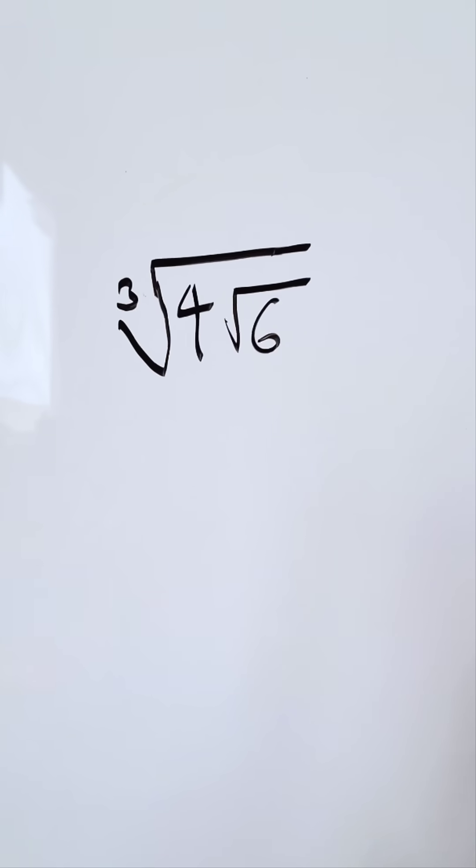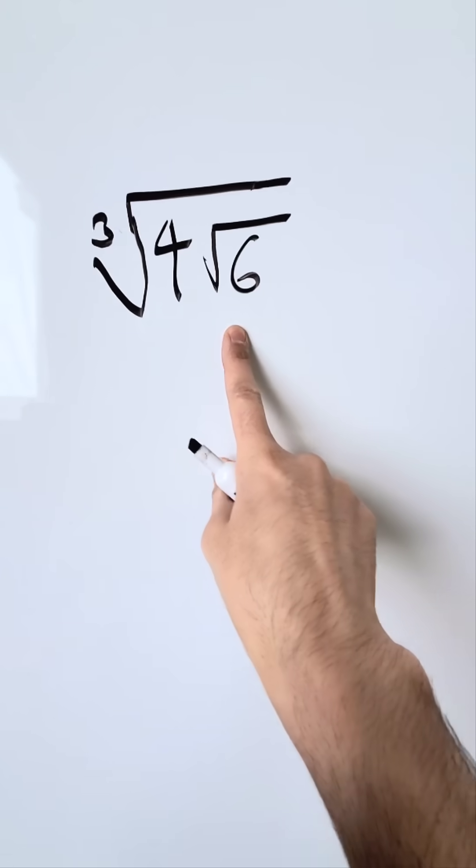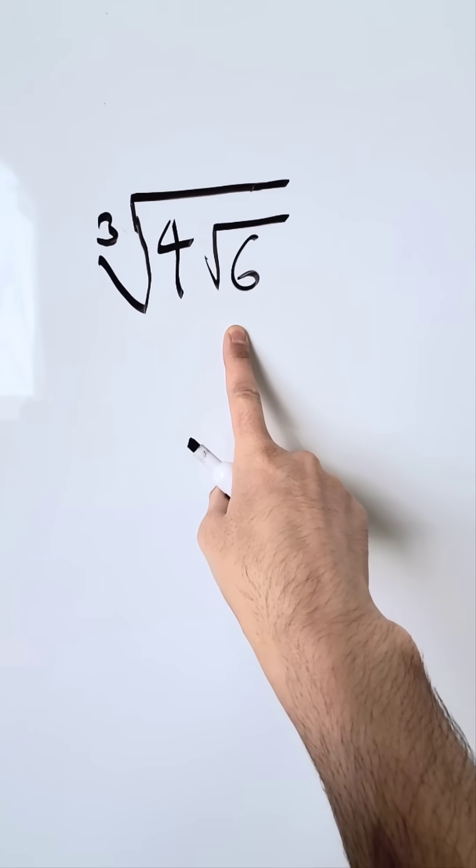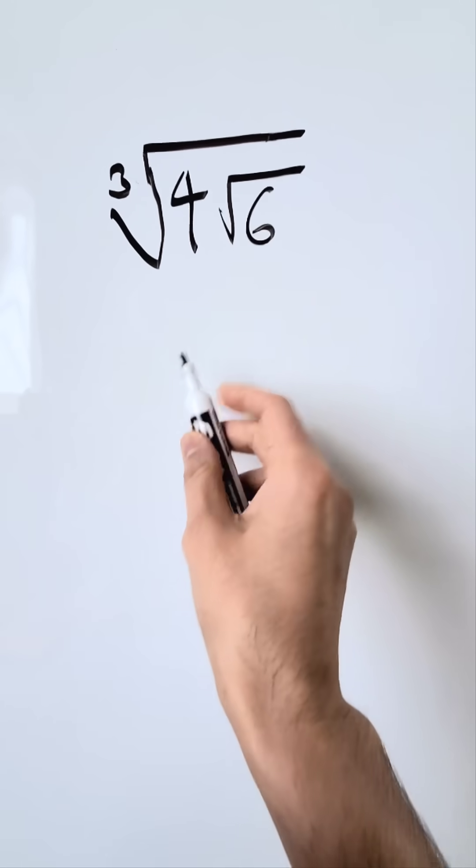Let's play around with some exponents and roots. I have here a cube root with a 4 in it. Within this cube root, I also have the square root of 6. I want to write this as a single factor with regards to a single root. How can we do that?